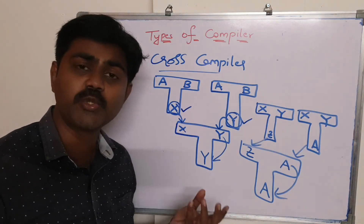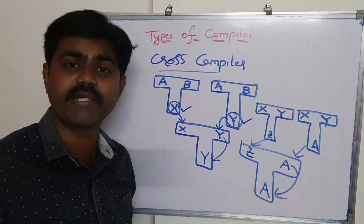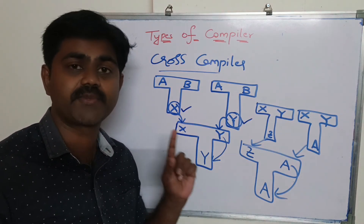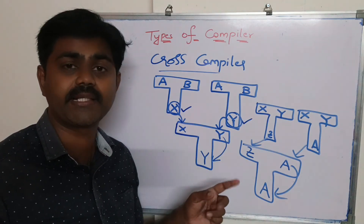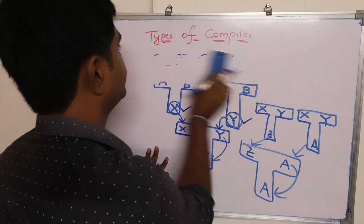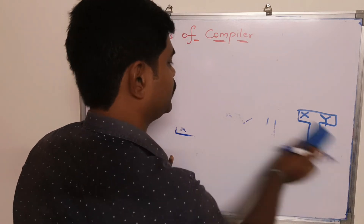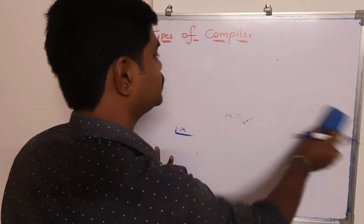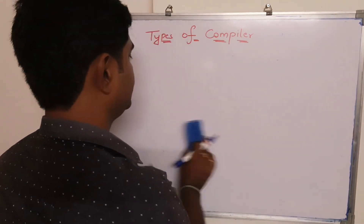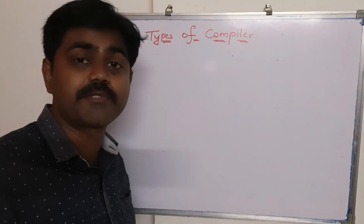If in two compilers the source and target are different, then there is no chance of getting a cross compiler. So the types of compilers we have are: the first one is incremental compiler and the second one is cross compiler. These are all about types of compilers.